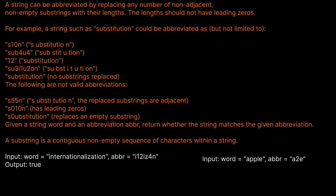Hello and welcome back to the Cracking Fang YouTube channel. Today we're going to be solving LeetCode problem 408, valid word abbreviation. A string can be abbreviated by replacing any number of non-adjacent, non-empty substrings with their lengths. The lengths should not have leading zeros.